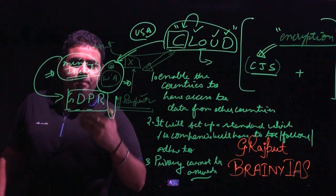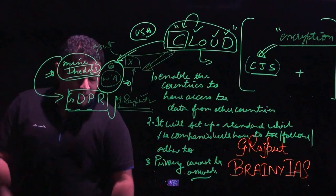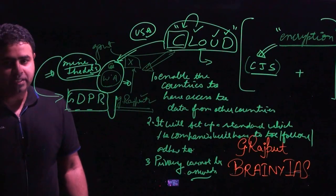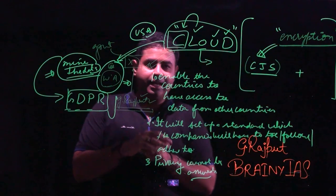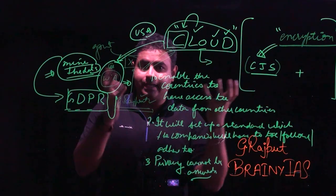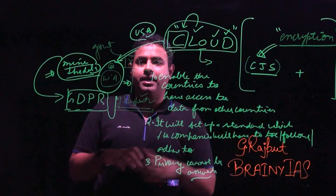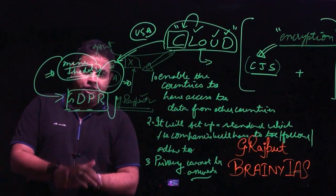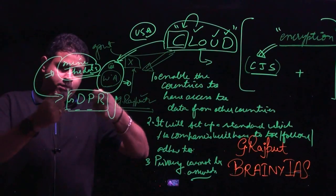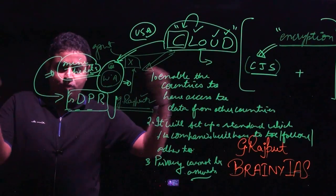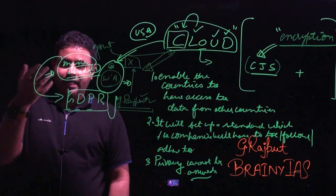So laws like the CLOUD Act are actually hitting into privacy, while laws like the GDPR are actually inhibiting companies from doing data mining and requiring them to follow certain standards. There are two kinds of laws coming in the field of data. Companies generally don't share data, but the USA's CLOUD Act — Clarifying Lawful Overseas Use of Data — says that you have data and we have criminal cases to unearth. Laws like the GDPR, on the other hand, don't allow the sharing or mining of data. So we are actually moving in two opposite directions — where privacy is getting curtailed and where privacy is getting compromised.